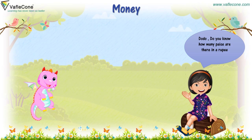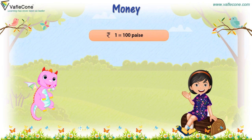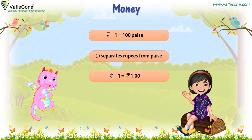Do you know how many paise are there in a rupee? No, Jia! 1 rupee is equal to 100 paise. The point separates rupees from paise. 5 rupees and 25 paise is written as 5.25.